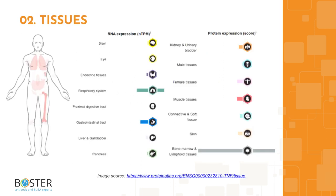Topic 2: Where is TNF alpha expressed? High RNA expression levels of TNF alpha have been found in the spleen, lungs, small intestine, and lymphoid tissues, with the highest levels detected in bone marrow. They are also expressed at lower levels in the brain, liver, gallbladder, kidney, adipose tissues, skin, lymph node, and heart muscle. You can find more information on proteinatlas.org to check which cell lines express TNF alpha, which will come in handy when designing positive and negative controls for western blot and immunohistochemistry.